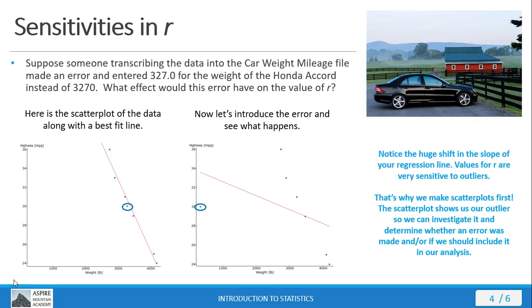That's a big reason why the first thing we do is make a scatter plot. We want to see if any outliers are in our data set, and if they are we can investigate further to decide whether we should include them or exclude them from our analysis. In this case, a proper investigation would reveal the transcription error and make the correction to the data point.